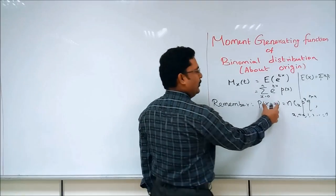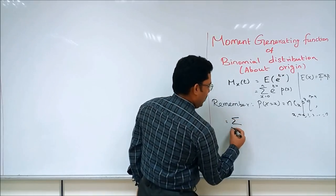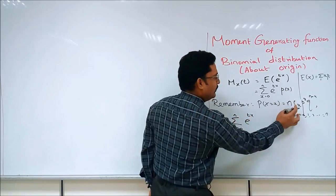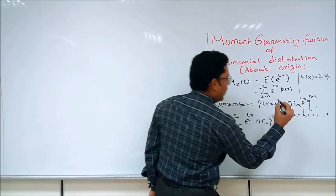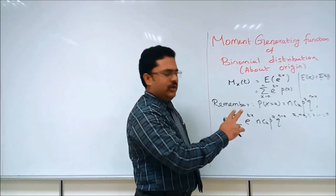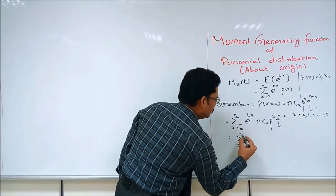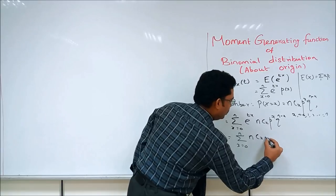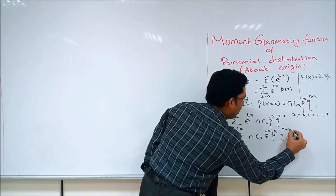Substituting the value of P(x) into the summation, we get: summation from x=0 to n of e^(tx) times nCx times p^x times q^(n-x). Rearranging the terms, this is summation x=0 to n of nCx times e^(tx) times p^x times q^(n-x). Now let us group the like powers using the laws of exponents.